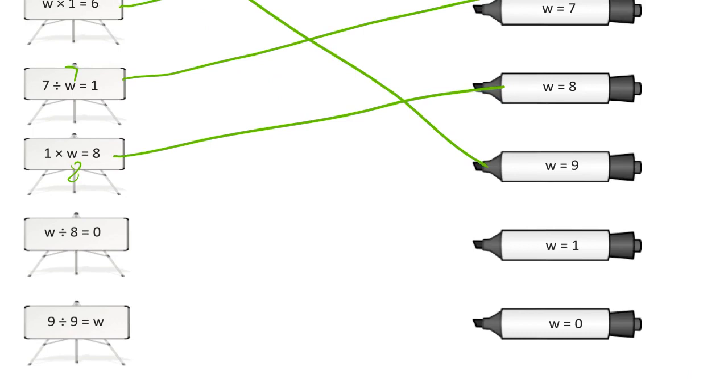Something divided by 8, we've got a 0 quotient here. That means we have to have a 0 for our dividend.